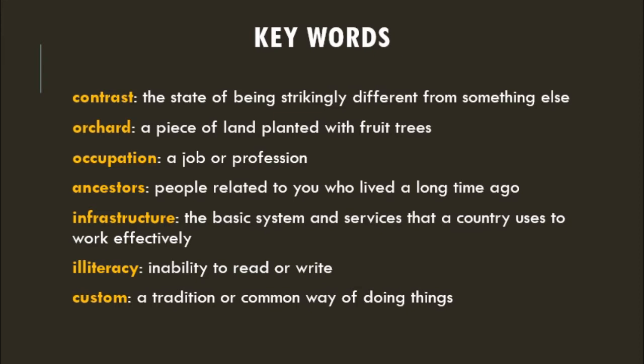Before starting the lesson, let's look at some keywords. Our first keyword is 'contrast' — the state of being strikingly different from something else. 'Orchard' — a piece of land planted with fruit trees. 'Occupation' — a job or profession. 'Ancestors' — people related to you who lived a long time ago. 'Infrastructure' — the basic system and services that a country uses to work effectively, such as transport, electricity, and water supply. 'Illiteracy' — inability to read or write. 'Custom' — a tradition or common way of doing things.